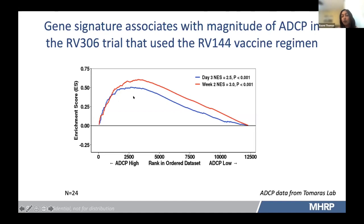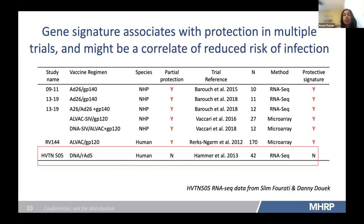We also identified it at day three after the fourth vaccination. To summarize, this table shows all the different vaccine regimens where we looked for this gene signature — all studies had partial protection — and we see the presence of the protective signature regardless of the vaccine regimen or method. Danny Tework had generated RNA-seq data from HVTN505, a vaccine trial that did not show efficacy, and Sloan Ferrati looked for this gene signature comparing vaccine uninfected to infected people. He did not see this gene signature being enriched in HVTN505.